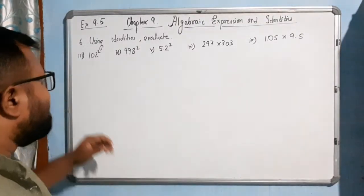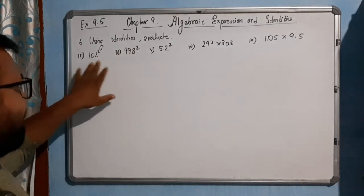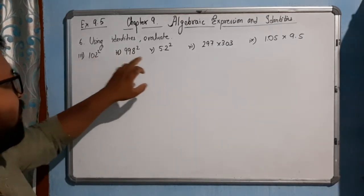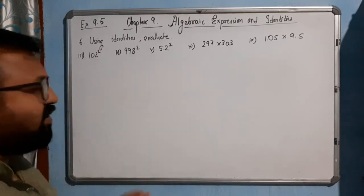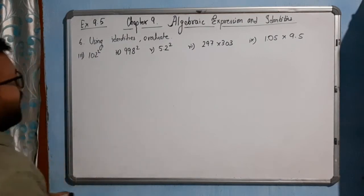Hello students! Now come to the next question, question number 6. Using identities, evaluate these options. I have opted 1, 2, 3, 4, 5 options. The rest you can do by yourself. So let's see how we will try to solve this one.